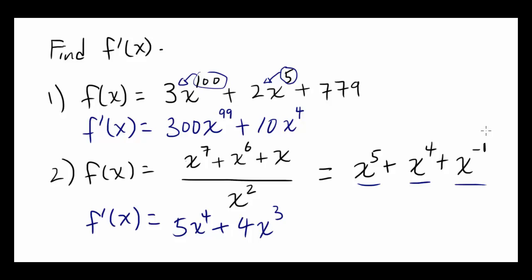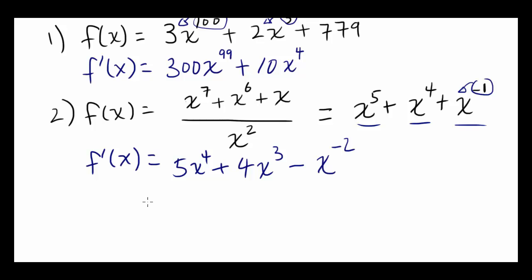Derivative of x to the negative 1st power, you bring this negative 1 down. So you have plus negative 1, or negative. And you're going to subtract 1 from negative 1 to get negative 2. And you can rewrite x to the negative 2nd power like this, 1 over x squared.